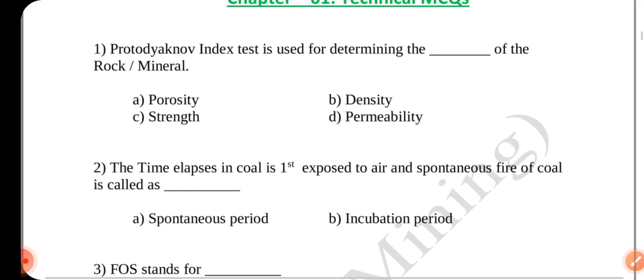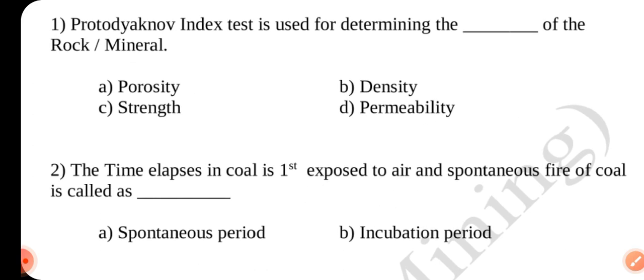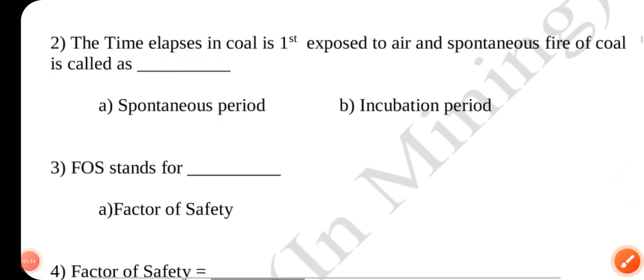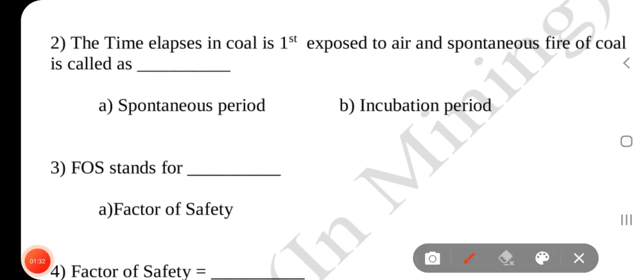Question number 1: The proto-diagonal index test is used for determining the strength of the rock or mineral. Answer is C — Strength. Question number 2: The time elapsed from when coal is first exposed to air until spontaneous combustion occurs is called the incubation period. Answer is B — Incubation period.